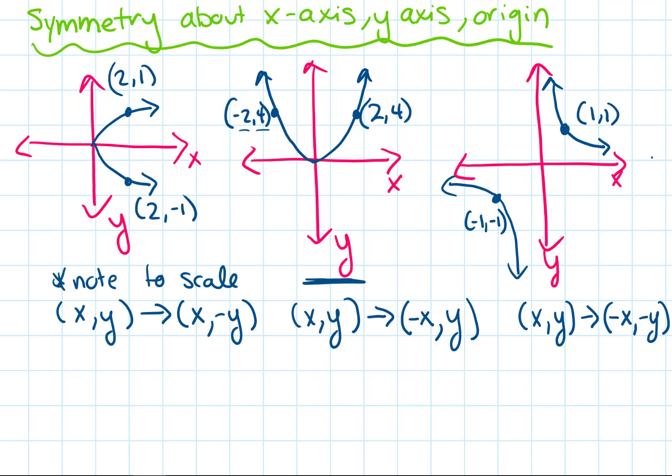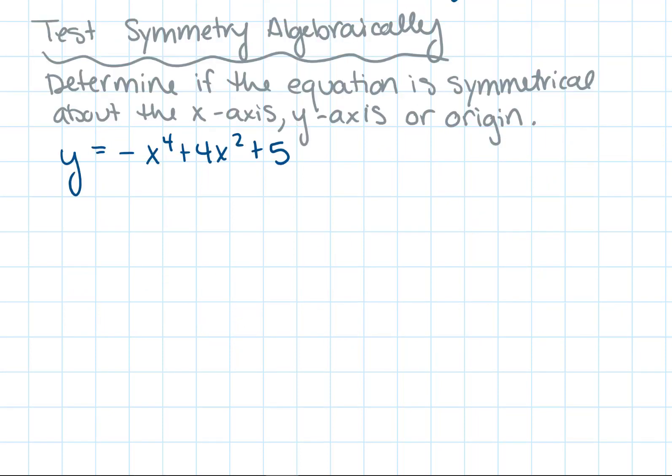That takes care of the visuals, but how do we determine if something is symmetrical if we have to prove it algebraically? We're going to test algebraically. The question is: determine if the equation is symmetrical about the x-axis, y-axis, or the origin. You can have more than one type of symmetry, so you actually have to do the test for each different type. We're given the equation: y equals negative x to the fourth plus 4x squared plus 5.